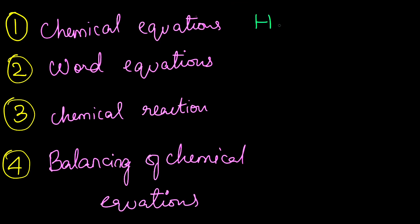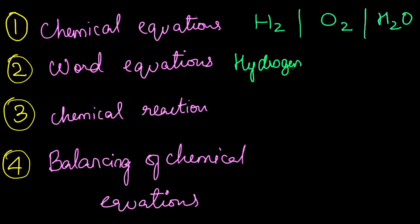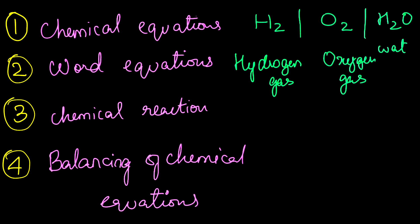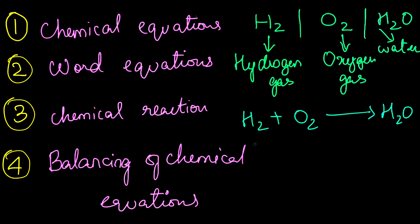A chemical equation is a symbolic representation. For example, we write H₂, O₂, or H₂O — three different molecules. H₂ stands for hydrogen gas, O₂ stands for oxygen gas, and H₂O stands for water. Remember, it is H₂O, not H₂O₂. If we react these molecules together, it becomes a chemical reaction — like H₂O₂ plus O₂ gives rise to H₂O.